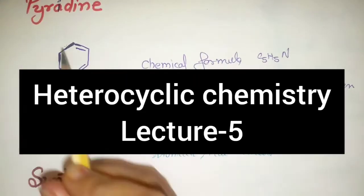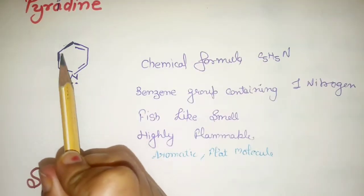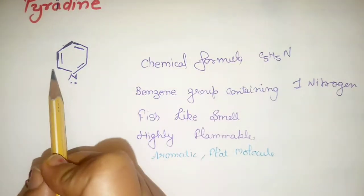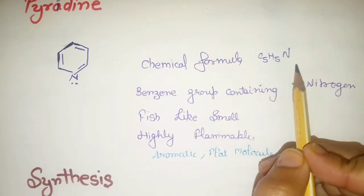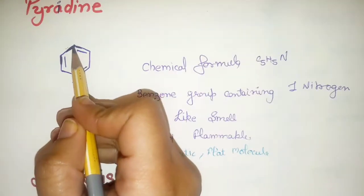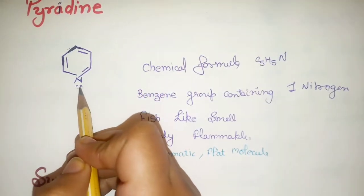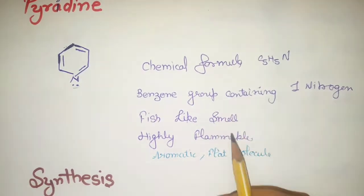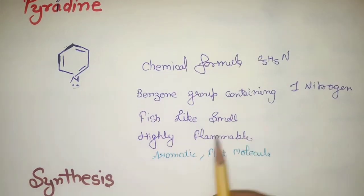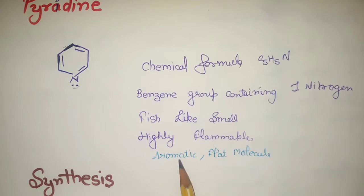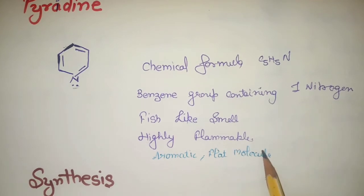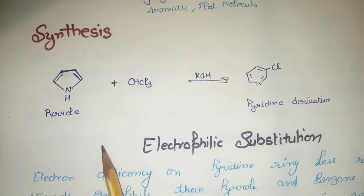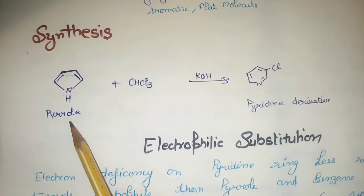Pyridine synthesis and electrophilic substitution is covered in one position. We call it Pyridine. The spelling is P-Y-R-I-D-I-N-E. Its chemical formula is C5H5N. It has a fish-like smell, an unpleasant smell. It's highly flammable, easily handled, aromatic and flat molecule.